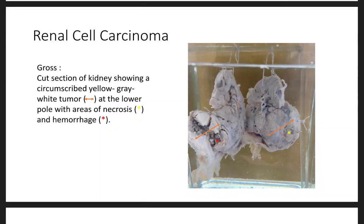Let's learn about the gross pathology of renal cell carcinoma. This is a gross cut section of a kidney showing a circumscribed yellow-gray-white tumor, indicated by the orange arrow.